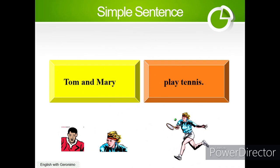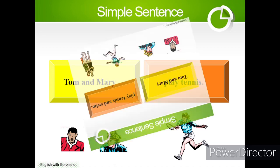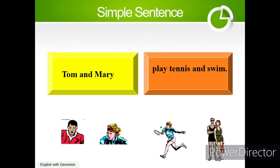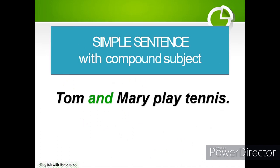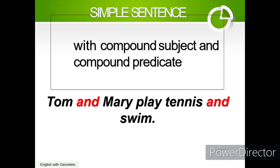Now let's look at two subjects. 'Tom and Mary play tennis' — here 'Tom and Mary' is a compound subject and 'play tennis' is the predicate. A simple sentence can also have a compound predicate: 'Tom and Mary play tennis and swim.' That is a simple sentence with compound subject and compound predicate.